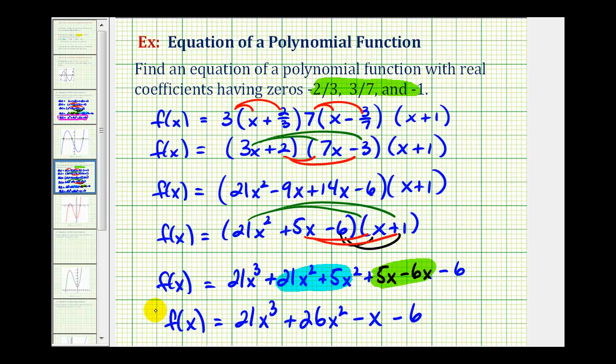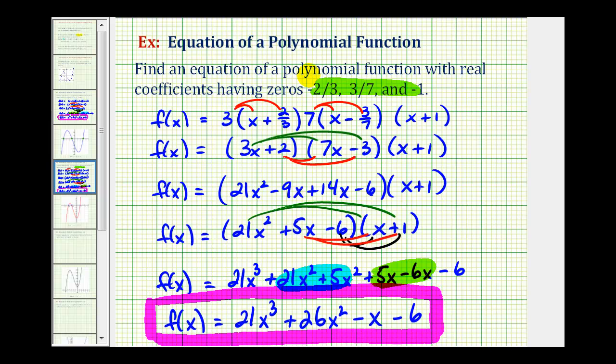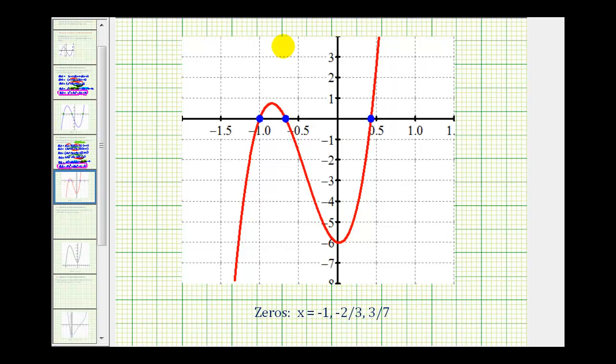This would be a possible polynomial function or cubic function that has the given zeros. And again, to verify this graphically, if we graph the function we found, the zeros should be the x-intercepts. Notice how we have an x-intercept of -1. This looks like -2/3. And this looks like positive 3/7. It's a little bit more difficult to verify it graphically when we have fractional zeros. But I think it's still worth graphing it to check. I hope this was helpful.